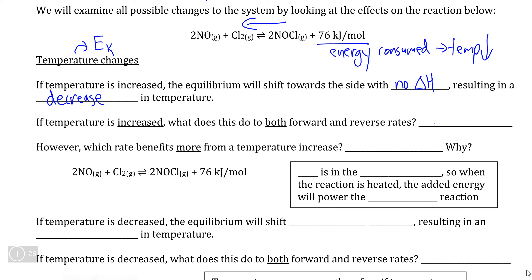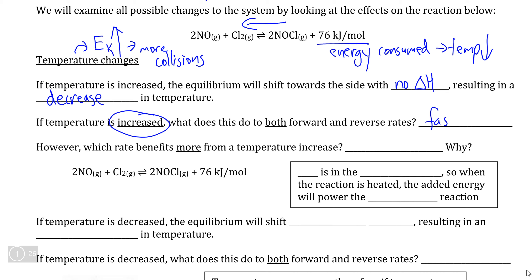Why exactly does this happen? Because we can't rely on philosophy to understand the chemistry forever. Temperature is just the average kinetic energy, and if we increase the kinetic energy of an entire equilibrium system, all of our reactants and products are now moving faster, which means more collisions and more chemical reactions. Since both forward and reverse reactions happen, a temperature increase causes both to happen faster, represented by drawing longer arrows.